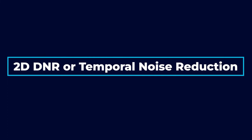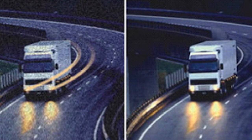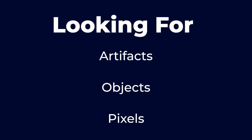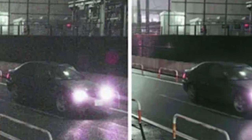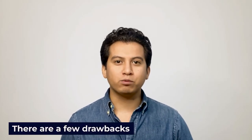Let's talk about how each of these techniques works to reduce noise in surveillance video images, starting with 2D DNR, or temporal noise reduction. 2D digital noise reduction works by analyzing each pixel in each frame as part of a sequence, comparing each frame's pixel as part of that overall sequence, looking for artifacts, objects, and pixels that do not appear consistently from frame to frame. By doing this, it's able to select pixels that are most likely to represent noise and isolate and repair them. 2D DNR is an effective noise reduction method for basic purposes, but there are a few drawbacks with using it for surveillance.